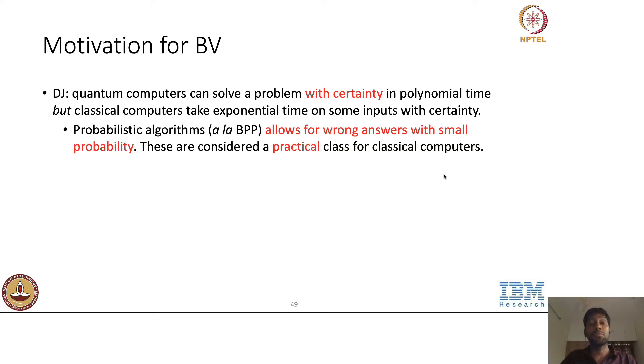But probabilistic algorithms are still practical. So in the real world, we are okay with allowing for wrong answers with very small negligible probability. So if we allow for negligible probability, the Deutsch-Jozsa problem can be solved even by classical computers in polynomial time.